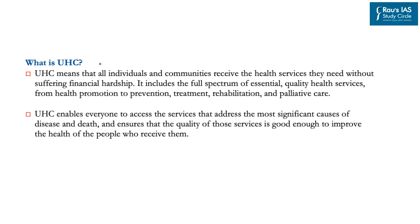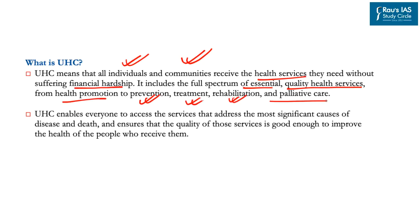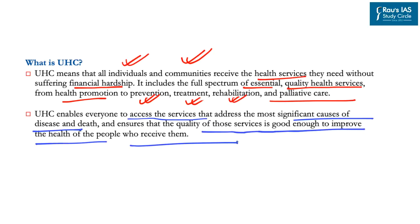According to the World Health Organization, universal health coverage means that all individuals and communities receive the health services they need without suffering any financial hardship. It includes the full spectrum of essential quality health services — from health promotion to prevention, treatment, rehabilitation and palliative care — and ensures that quality services improve the health of those who receive them.